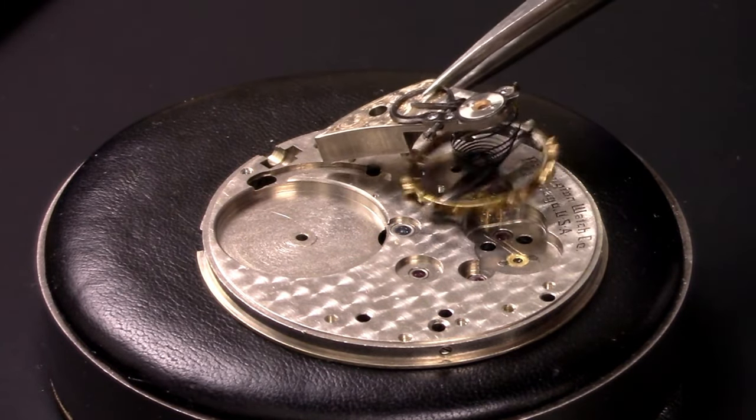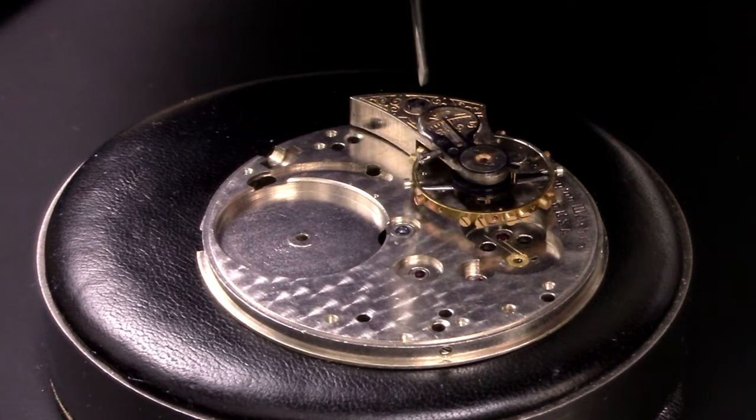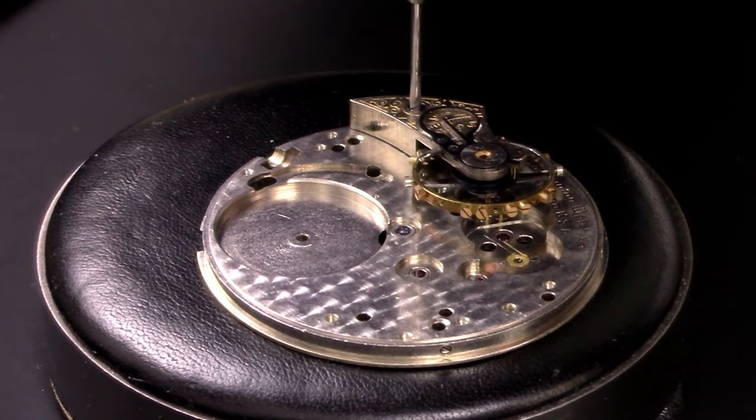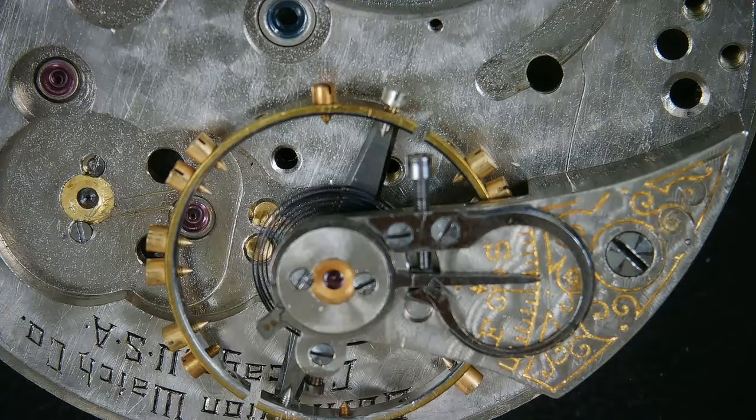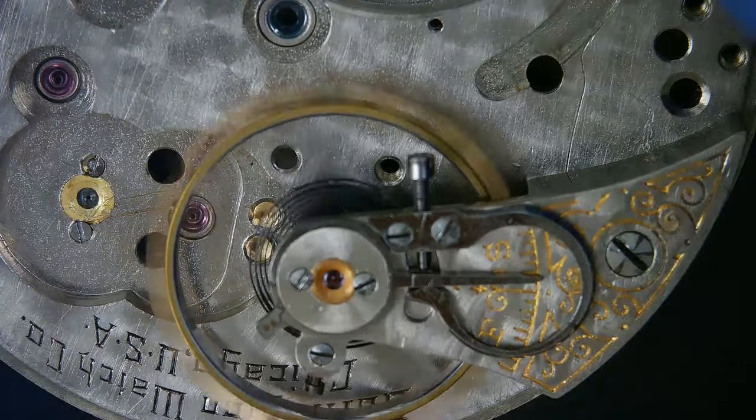So I find it helpful to install the balance complete onto the main plate before moving forward. The balance is so often the source of a non-running watch, so I find it easier to diagnose issues in isolation. And a puff of air here, and yeah, the motion looks really nice and healthy.